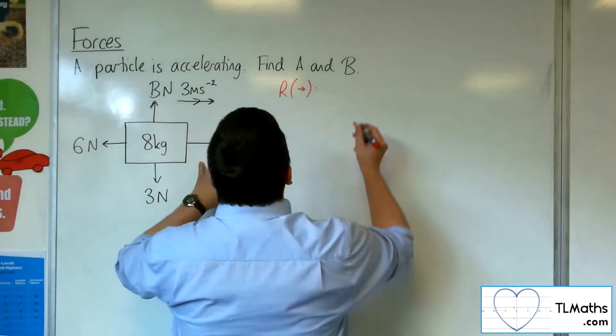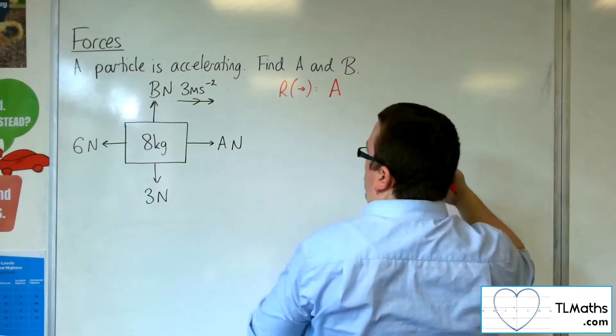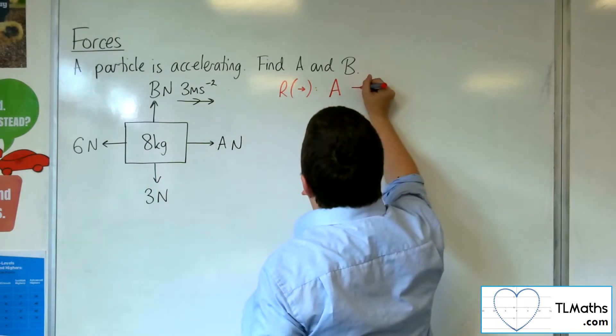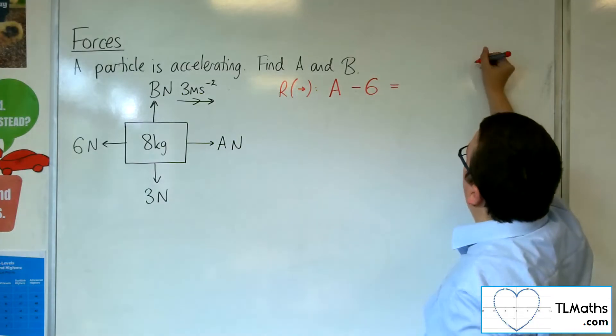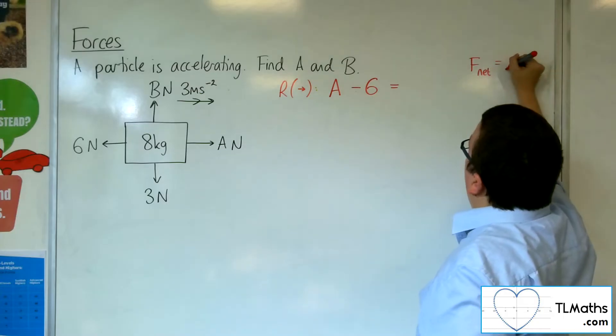We've got A working that way. We've got 6 newtons working against us. And it's not equal to 0 because we're using F net equals MA.